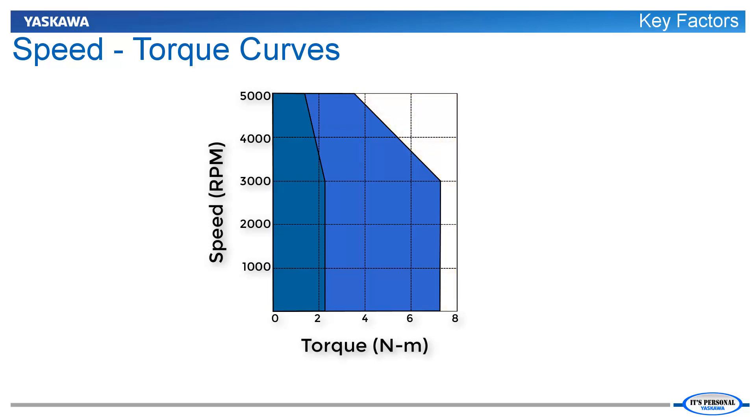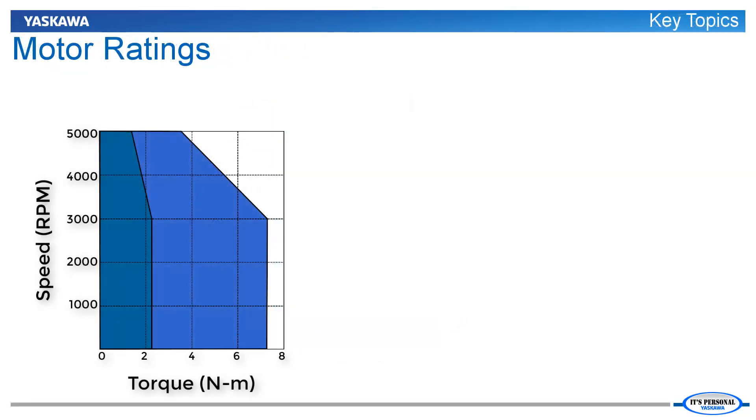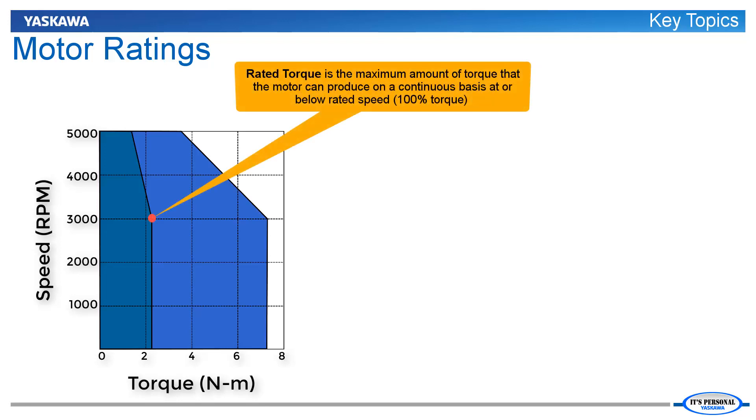When selecting a motor, it is imperative to ensure that the speed-torque curve is used effectively. The speed-torque curve displays several points of interest. Rated torque is the maximum torque the motor can produce continuously at rated speed and lower and is limited by motor heating. This rated torque is given the value of 100% torque.